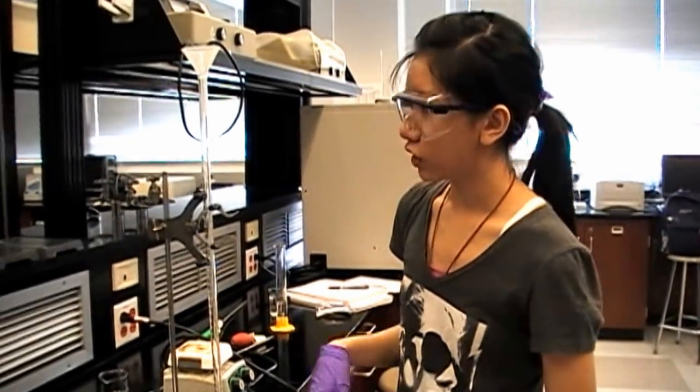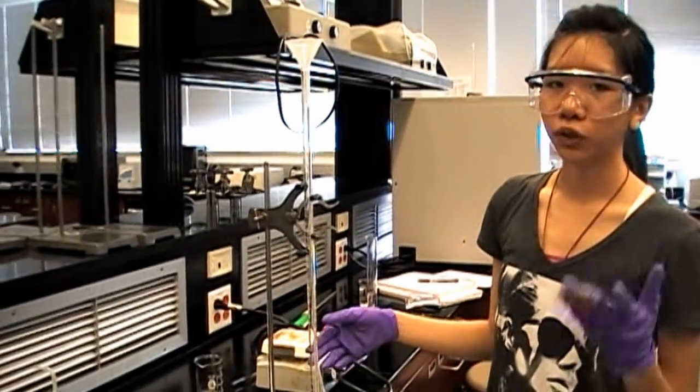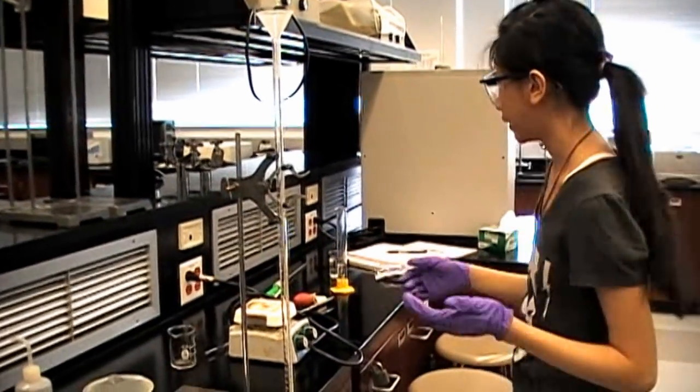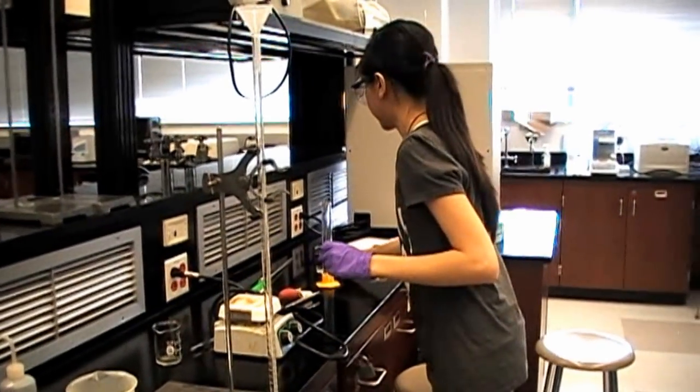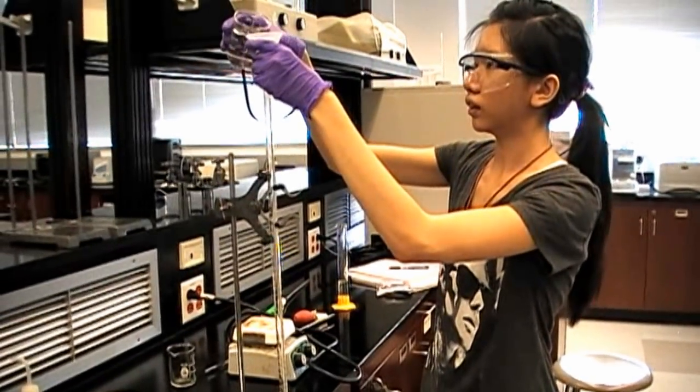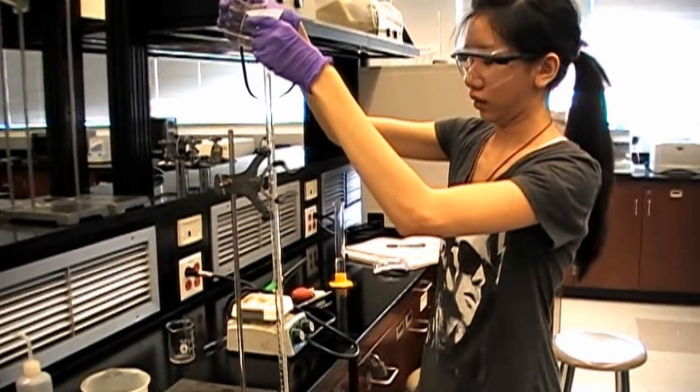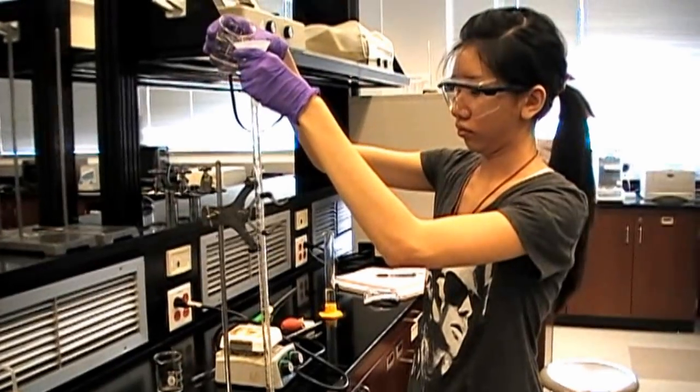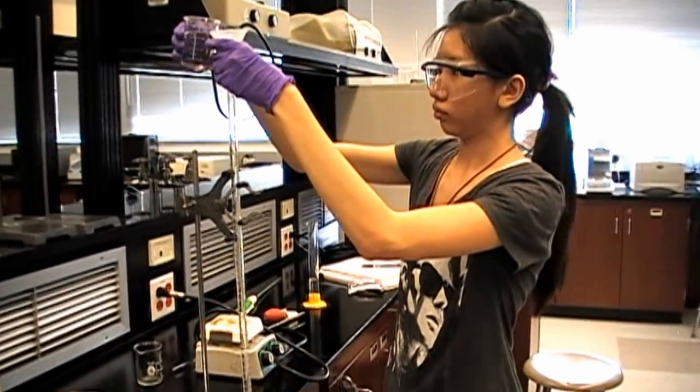First, you have to prime your burette with your sodium hydroxide. Priming your burette is essential because you want to make sure you're titrating with the same concentration of your solution. Your titrant is the NaOH in the burette.